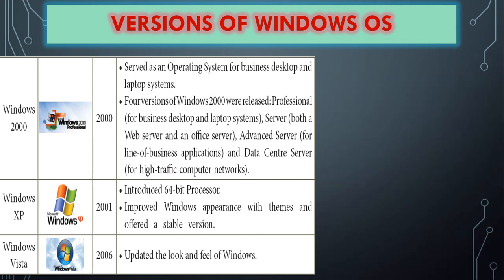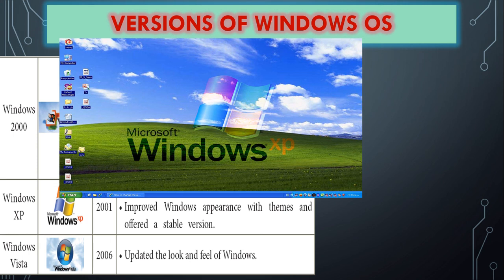Windows XP, introduced in 2001, was more popular than other versions — millions of people started using it. It was very user friendly, with attractive color combinations. It introduced 64-bit processing, making execution and access faster. It improved the Windows appearance with themes and offered a more stable version.